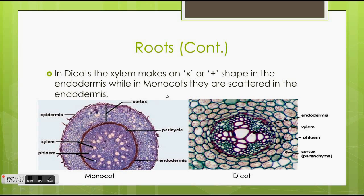So on the left, we see that inside the endodermis, the xylem and the phloem make a circular type shape, but they're scattered out and don't really have a structured form to them. While on the right side, we see the dicot, inside the endodermis, that the xylem makes this plus shape, while the phloem surrounds it.